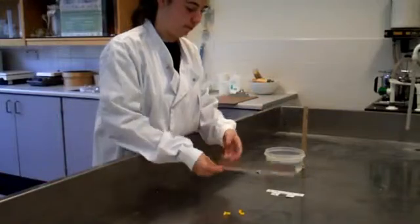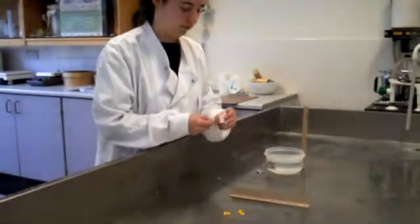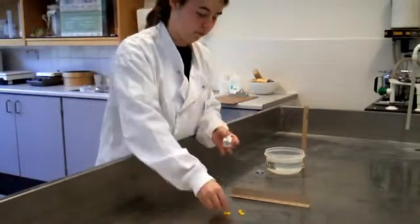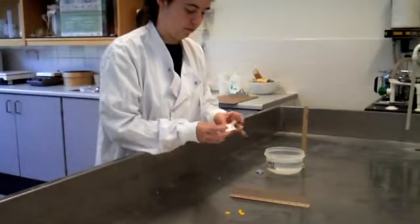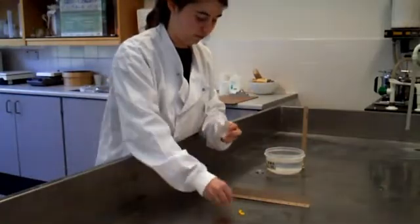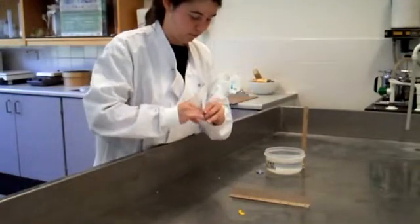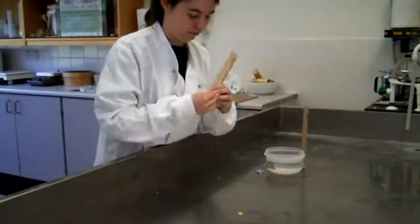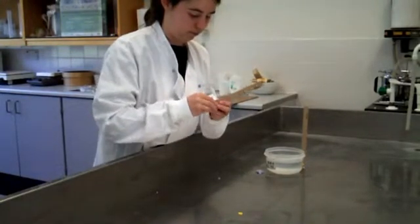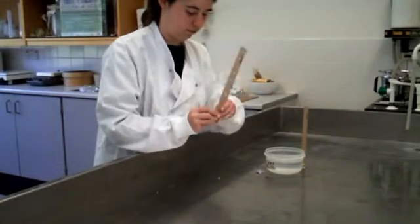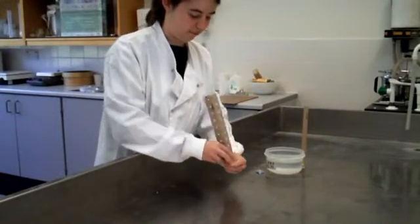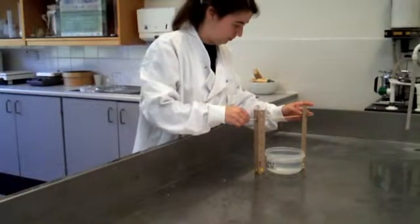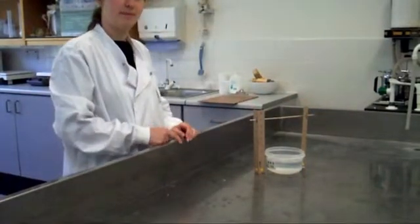Start by creating your stand. Put the stand either side of the tub full of water. Put the wooden dowel across the top of both sides of the stand.